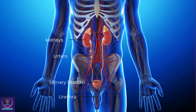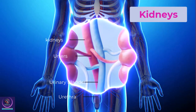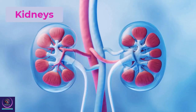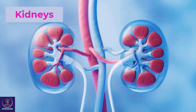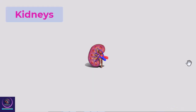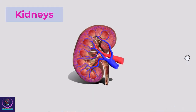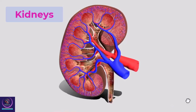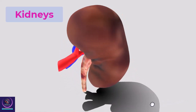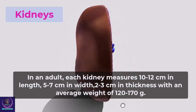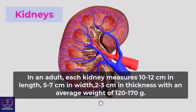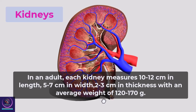Kidneys are bean-shaped, reddish-brown structures situated between the levels of the last thoracic and third lumbar vertebra, close to the dorsal inner wall of the abdominal cavity. In an adult, each kidney measures 10 to 12 centimeters in length, five to seven centimeters in width, and two to three centimeters in thickness, with an average weight of 120 to 170 grams.